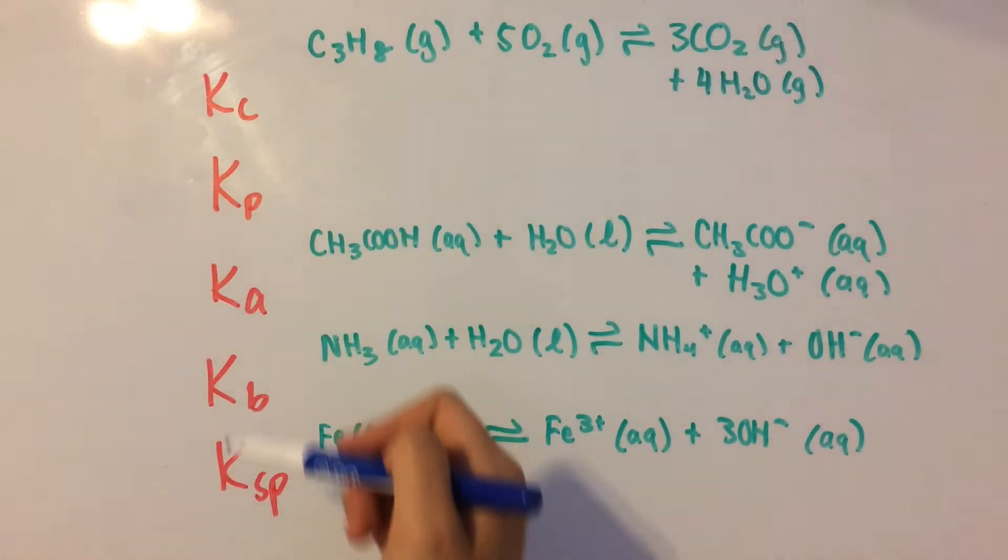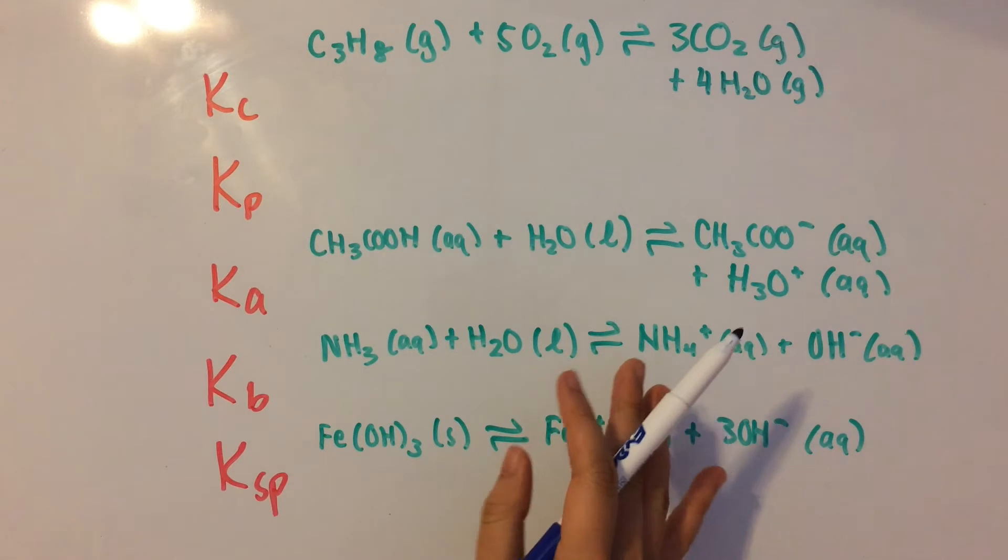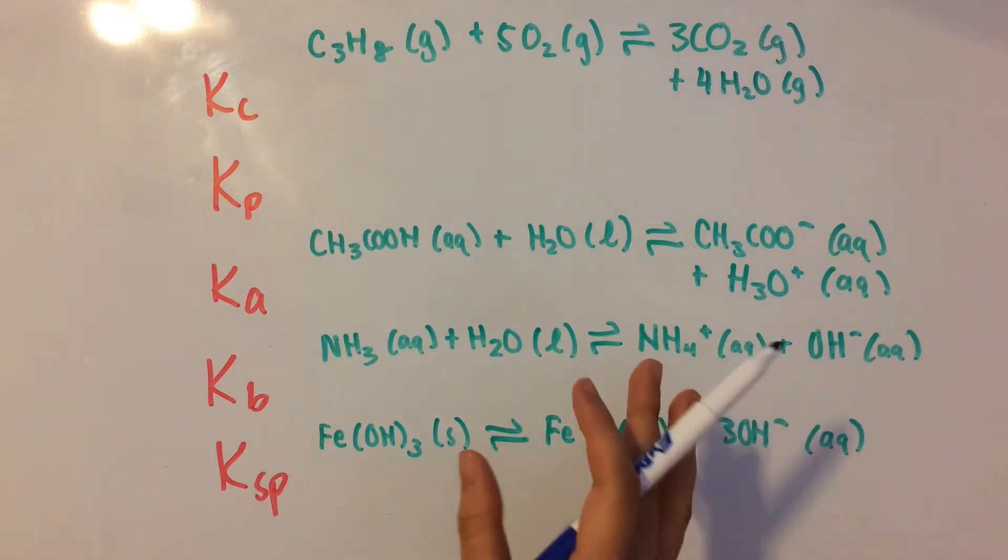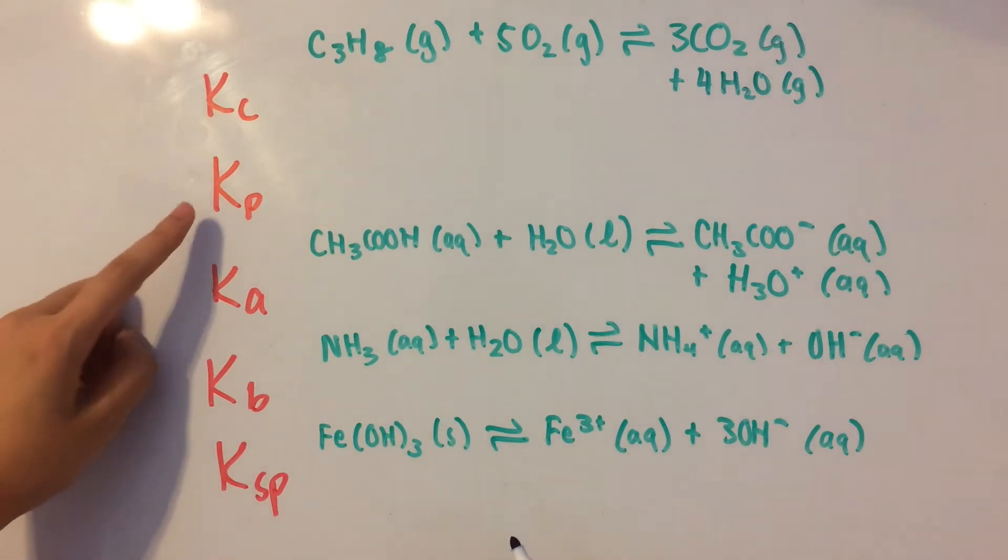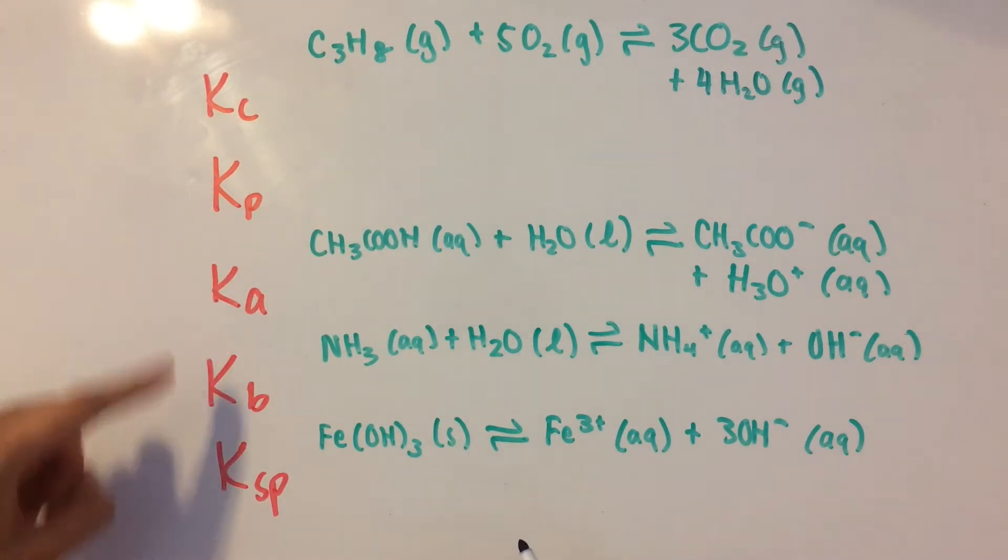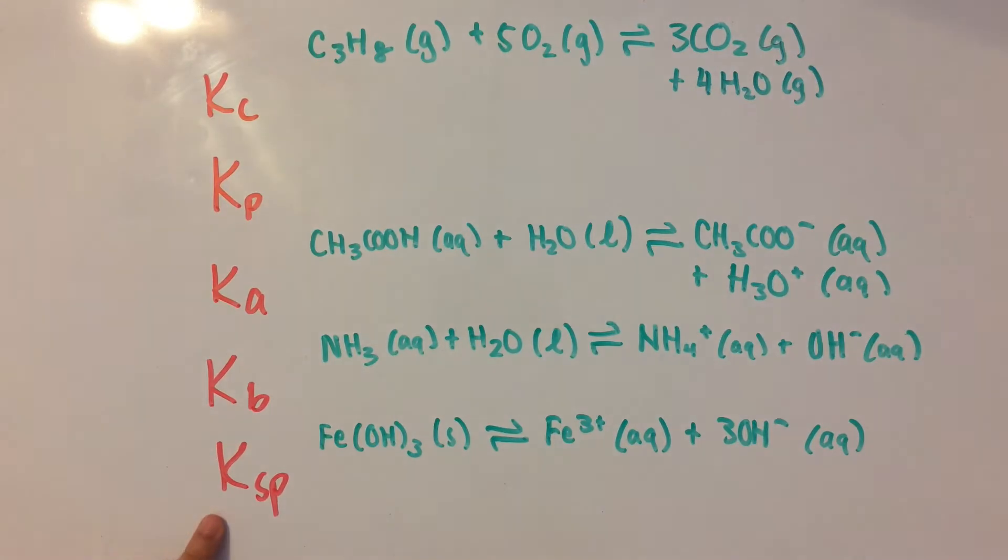So there's quite a few equilibrium constants, but don't worry, they're all really easy to remember and straightforward. We have Kc for concentration, Kp for pressure, Ka for acid, Kb for base, and Ksp for solubility product. Not bad.